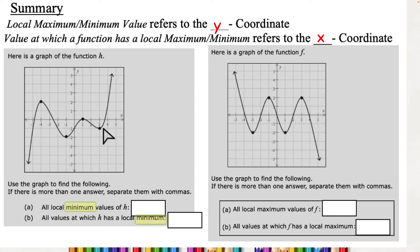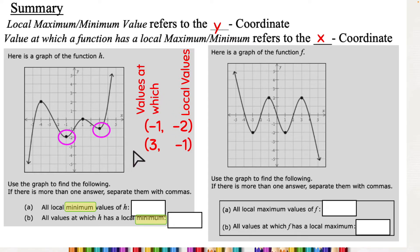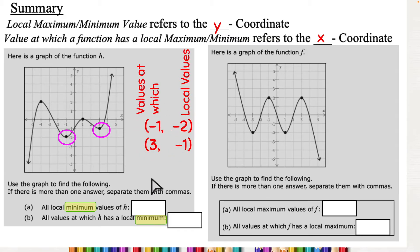I'm looking for the x and y-coordinates of these local minimums, and I need to make sure I'm putting them in the right spots. Values at which are my x-coordinates; local values are my y-coordinates. I'm just separating x's and y's — it's a lot like when we did domain and range. So I have negative two and negative one for one minimum, and negative one and three for the other. Make sure when you're typing it in, it's negative two, not just two.